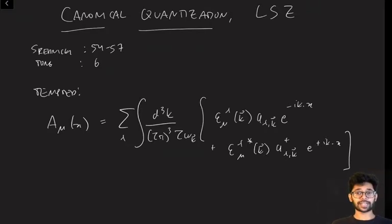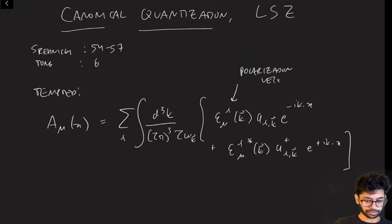Okay, so over here the a and the a-daggers are creation and annihilation operators as usual. These epsilons here are polarization vectors for the photon, so they're not operators, they're vectors rather. And here this lambda runs over polarization states.